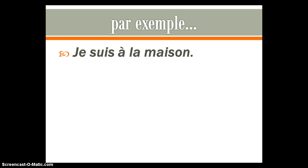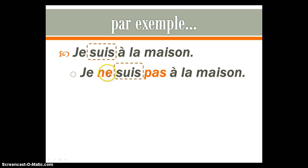First example: je suis à la maison — I am at home. We have to remember, suis is the verb. The verb is usually the first word that follows the subject. So here is my subject, je. Je suis — I am — this is my verb, and it comes right after the subject almost always. Once you've identified your verb, then you can put your sentence together: Je ne suis pas à la maison. The key step really is to make sure you understand where the verb is.